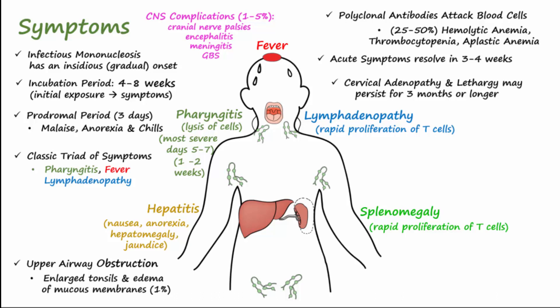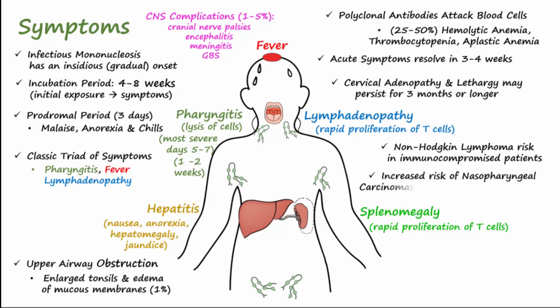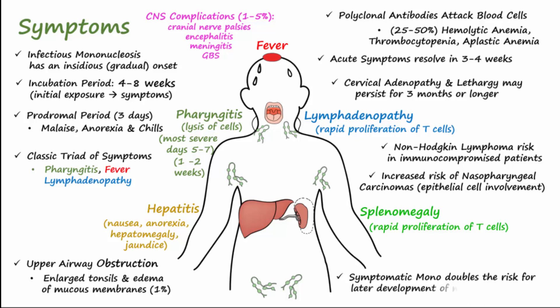In individuals with impaired T cell immunity, such as those with HIV, an EBV infection may lead to lymphoproliferative disorder, such as non-Hodgkin lymphoma, like Burkitt's lymphoma, or EBV-positive Hodgkin's lymphoma. In such cases, B cell division is unimpeded due to lack of T cells, increasing the risk of cancer. There is also an increased risk for nasopharyngeal carcinoma due to the epithelial cell involvement. Symptomatic mono also doubles the risk for later development of multiple sclerosis.